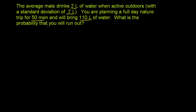Let's think about what's happening here. There's some distribution of how many liters an average man needs when active outdoors. They're all going to need at least more than 0 liters, so this would be 0 liters over here. The average male — the mean of the amount of water a man needs when active outdoors — is 2 liters. So 2 liters would be right over here. The mean is equal to 2 liters.